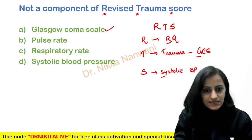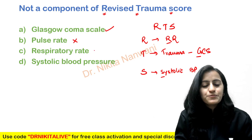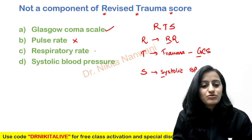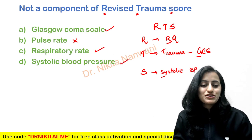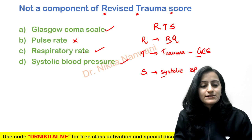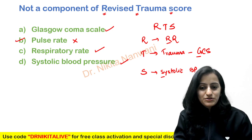So reviewing the options: GCS — yes. Pulse Rate — no. Respiratory Rate — yes. Systolic Blood Pressure — yes. So the answer is B, that is Pulse Rate, which is not a component of the Revised Trauma Score.